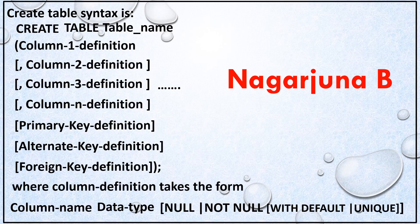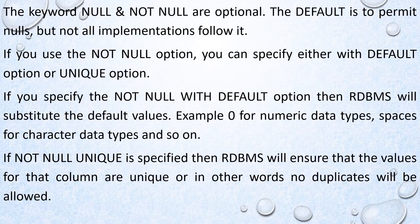The primary key definition is optional and can be written either at the time of creating a table or using an ALTER TABLE syntax. Similarly, alternate key definition and foreign key definition can be included. This completes the description of the column definition.